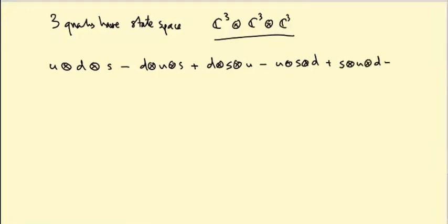That's sort of all you can do, right? That's a completely anti-symmetric combination of up, down, and strange, and it's actually, up to scale, the only one. So this is the thing that spans the trivial one-dimensional sub-representation inside C3 tensor C3 tensor C3.